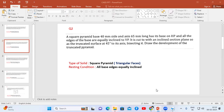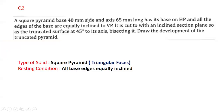In this video I'm going to explain the development of lateral surface of solids problem. This problem is chosen from a VTU model question paper. The question is: a square pyramid with base 40 mm side and axis 65 mm long has its base on HP and all edges of the base are equally inclined to VP. It is cut with an inclined section plane so that the truncated surface is at 45 degrees to its axis, bisecting it. Draw the development of the truncated pyramid.